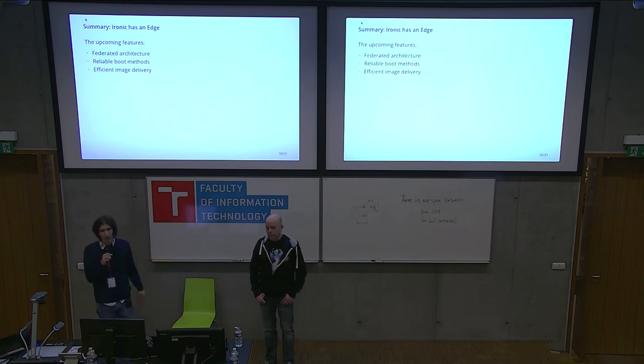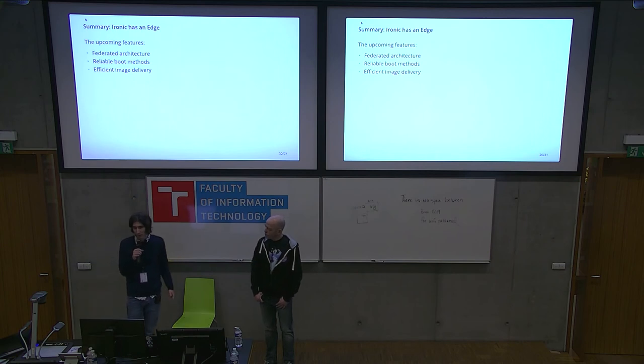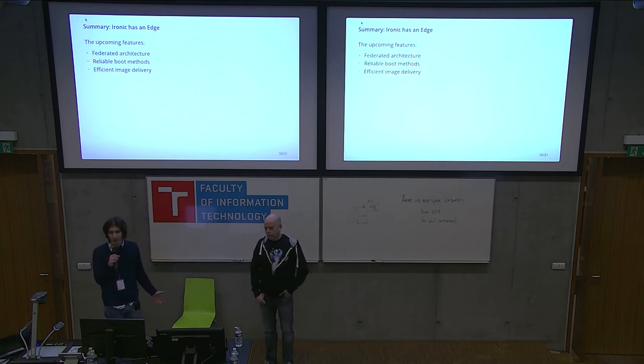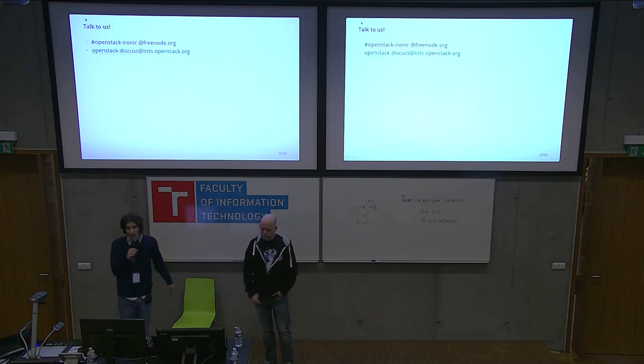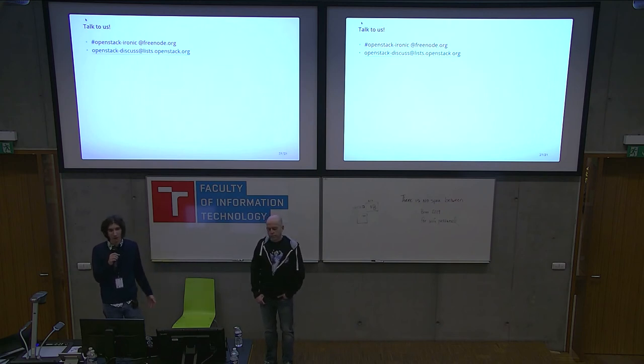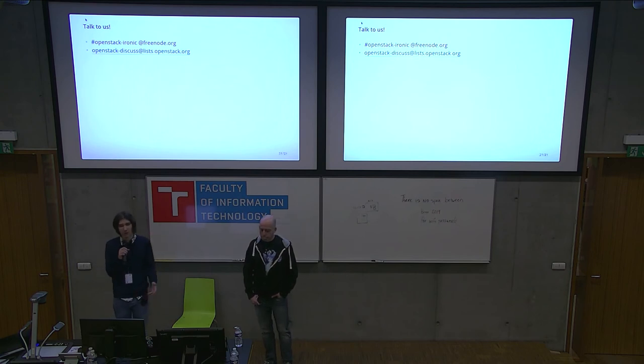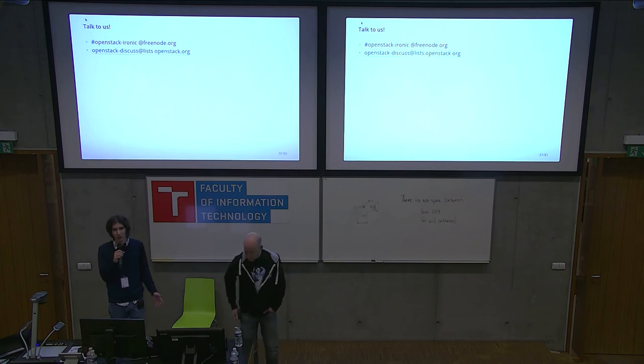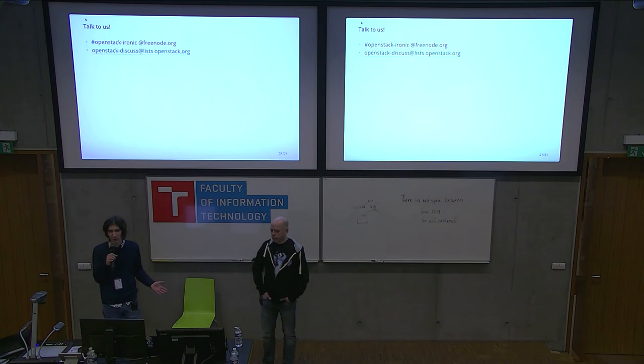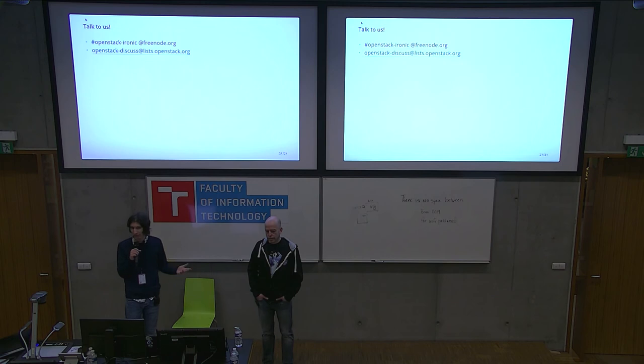So to sum it up, upstream is actively working on enabling edge architectures, enabling bare metal deployment in edge architectures. Our main direction of development right now is various approaches to federating architecture, reliable boot methods, and reliable methods of delivering network parameters, and efficient and fast image delivery for remote locations. And we need your help. If you have use case that requires provisioning or managing bare metals in the edge architecture, we want you to talk to us. Please come to our IRC. Please come to our mailing list. We want to know about your use cases. We want to know about your requirements. And, of course, if you want to help us coding, we'd be very welcome. We have an active community. We're going to review your code. And I guess that's it. We actually finished quite early. So we have plenty of time for questions. Thank you.